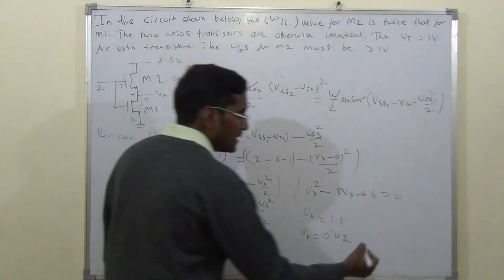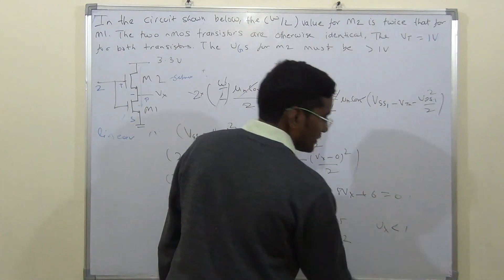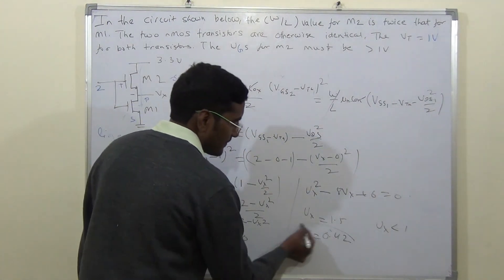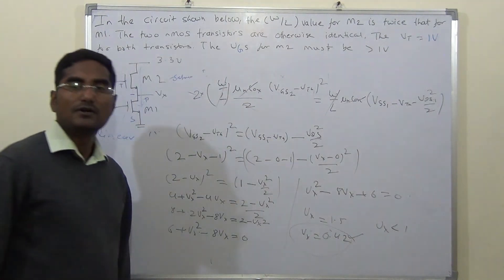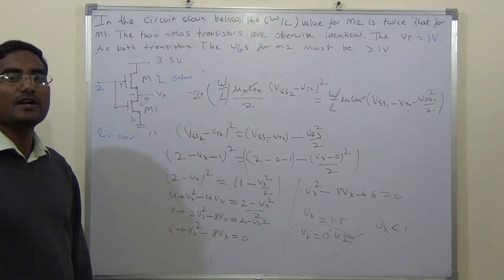Vx should be less than one. Less than one is this. So this is the answer. So it was a little typical. We had the first condition.